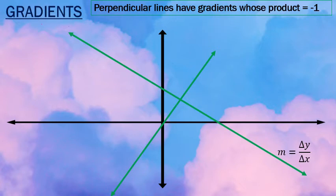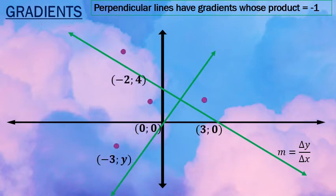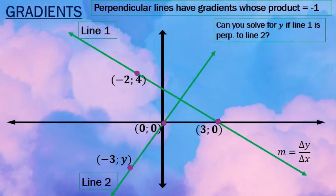What am I saying? I'm saying that they are the inverse of each other with a change in sign. So if we have one gradient being 4 over 5, the other gradient will be negative 5 over 4. You guessed it. So, do me a favor, pause the video and calculate y if you know that line 1 is perpendicular to line 2.